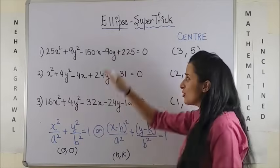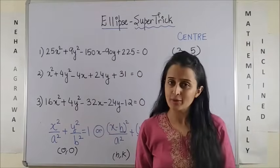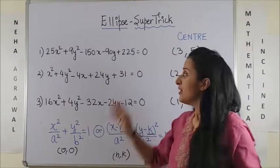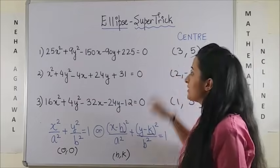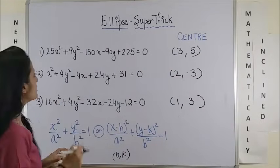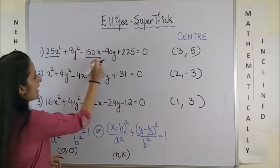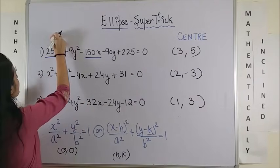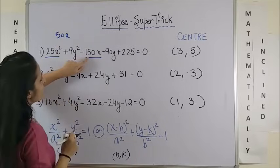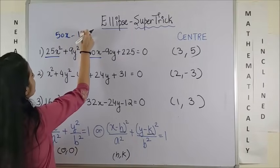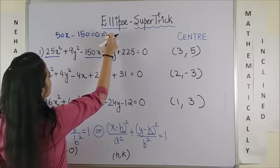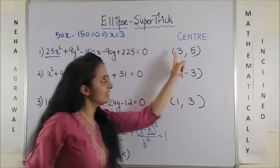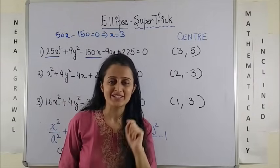So, all you've got to do is, the moment you see the general equation of an ellipse, in order to get the x coordinate, simply focus on the terms containing x and differentiate them with respect to x. So, here you get 50x and here you get minus 150 is 0. So, the answer is x is equal to 3. That is pretty much your x coordinate of the center.